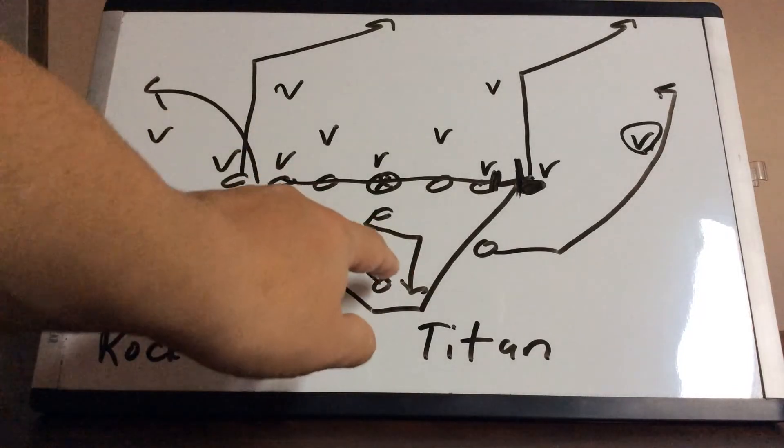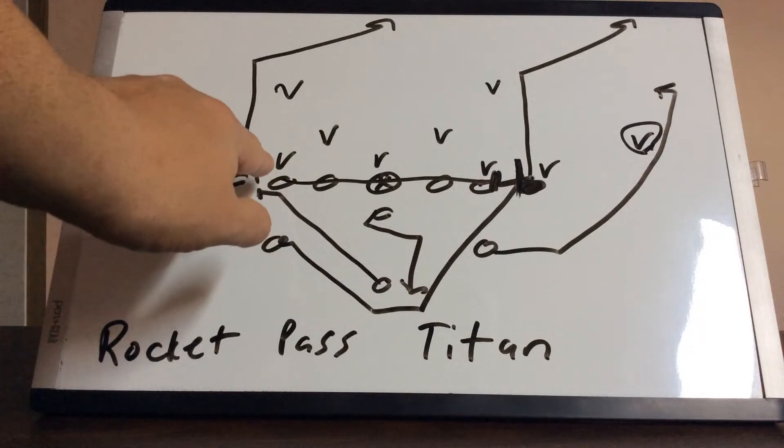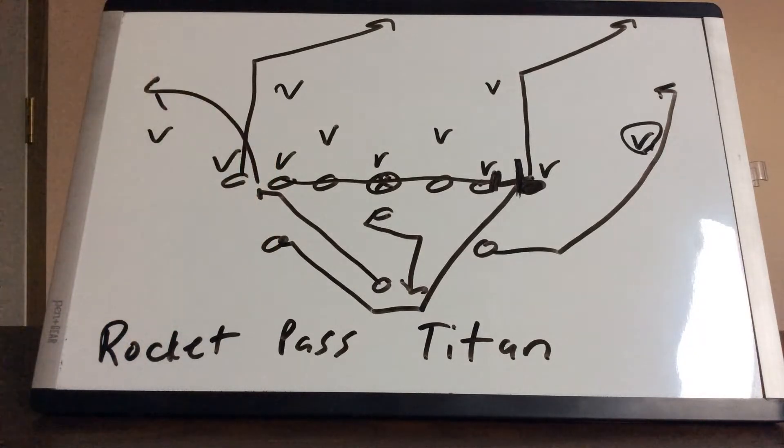The B back is going to run away from the call, touch the tackle flat and down. He's going to block the first right off the tackle. And if nobody shows up, he's going to run a six yard out.